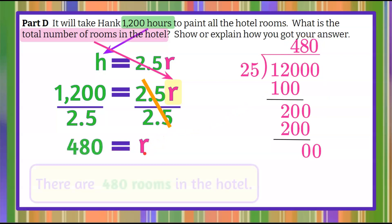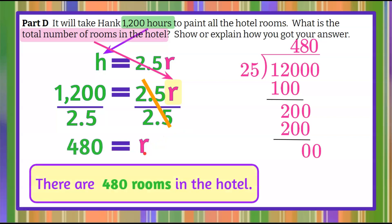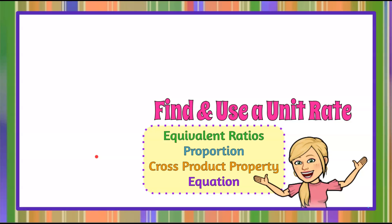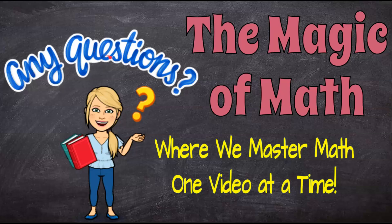The total number of rooms in the hotel is 480 rooms. That is how you find and use unit rate from equivalent ratios, proportions, cross product property, and an equation. Thank you for joining me at The Magic of Math, where we master math one video at a time. I hope you have a great day and come back soon.